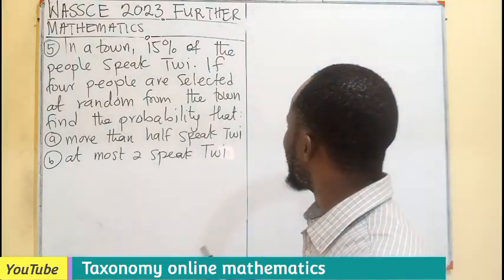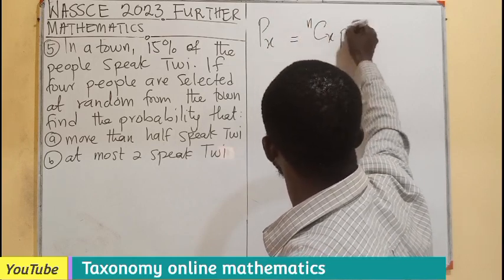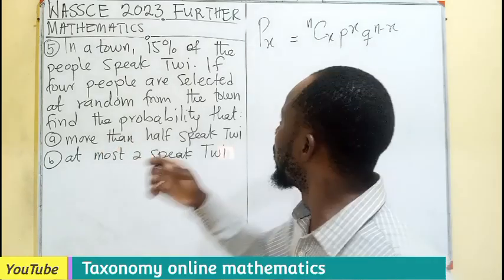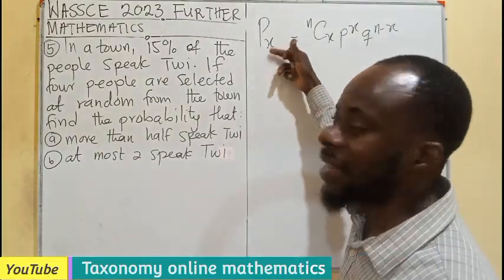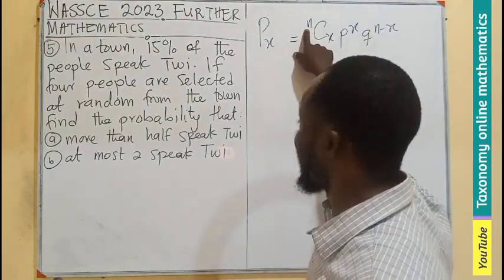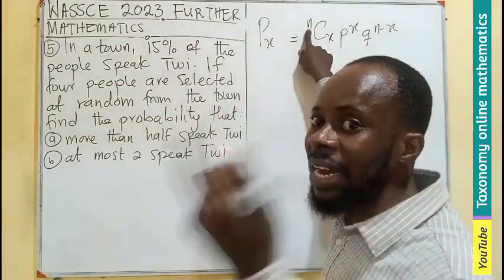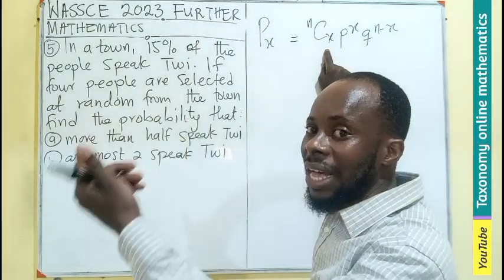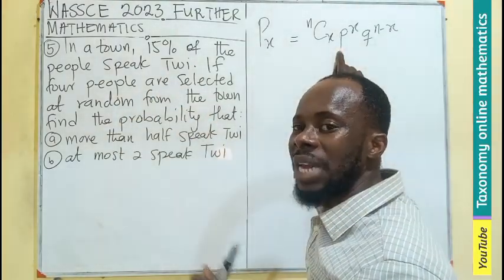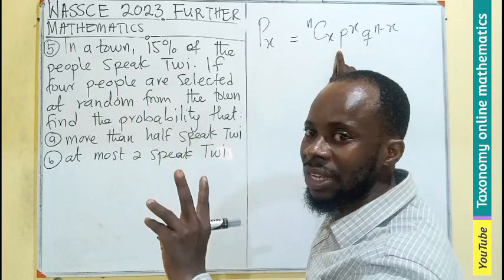We recall that the binomial probability formula is: P(X) = C(n, x) * p^x * q^(n−x). The trial in this case is the speaking of three languages. N is the number of selections — here, 4 people are selected. X is the number of successes. P is the probability of success, meaning those speaking three languages.